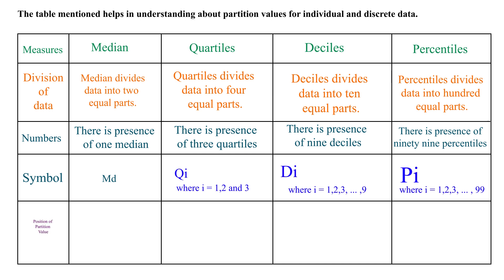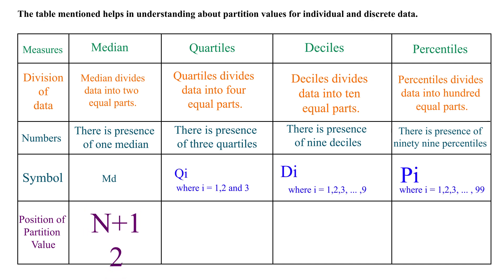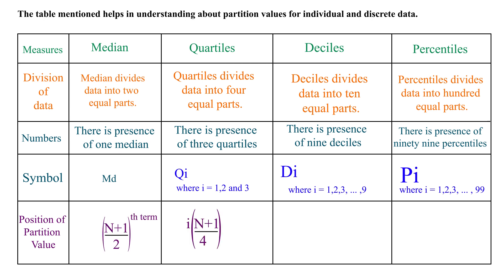Position of partition values: Position of median is equal to (n+1)/2 term. Position of deciles is equal to i(n+1)/10 term, where i equals one, two, three, till nine.